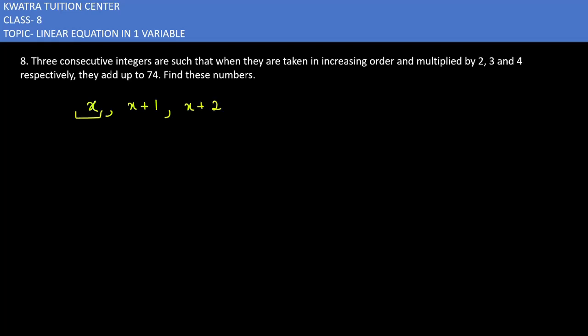The first number is multiplied by 2, the second number is multiplied by 3, the third number is multiplied by 4, and when we add them up it equals 74.